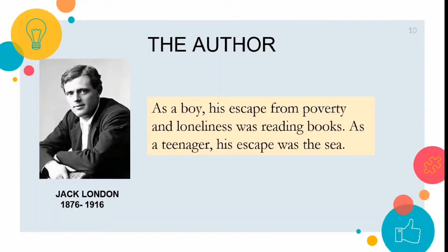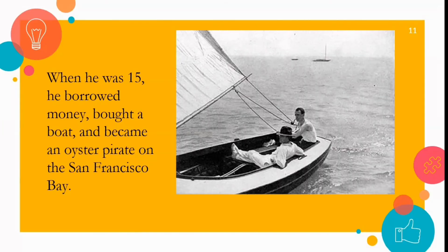The author: Born to an indifferent mother and an absent father, Jack London grew up in a poor neighborhood in Oakland, California. As a boy, his escape from poverty and loneliness was reading books. As a teenager, his escape was the sea. When he was 15, he borrowed money, bought a boat, and became an oyster pirate on the San Francisco Bay. At 17, he worked aboard a schooner that sailed the North Pacific. When he returned home, the only work he could find was low-paying manual labor. Fascinated by stories he heard about people mining for gold in Canada's Yukon territory, he sailed north at age 21.